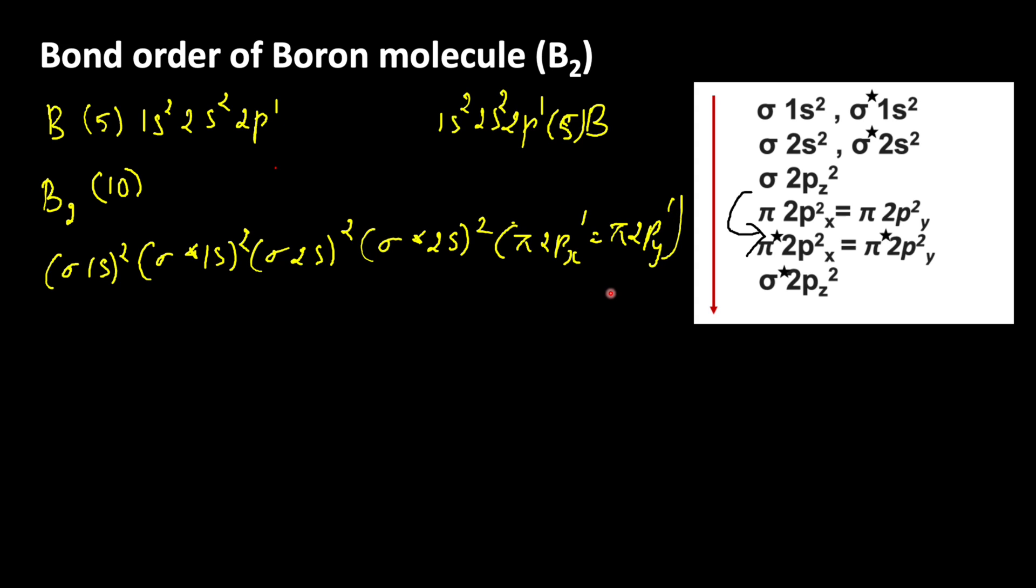Using this, now let us write the bond order of boron molecule. Bond order equals Nb minus Na by 2. Nb is number of bonding electrons. Na is number of anti-bonding electrons.